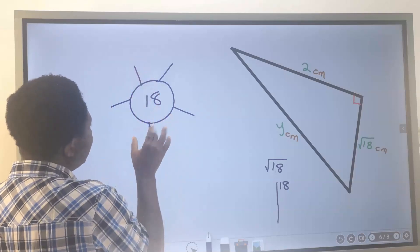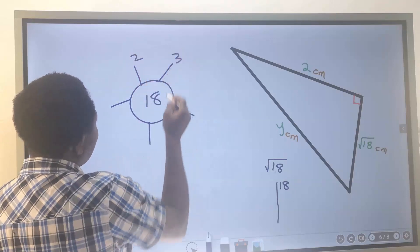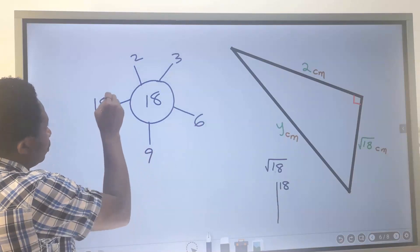What can divide 18 without remainder? It is 2, it is 3, it is 6, it is 9, it is also 18.